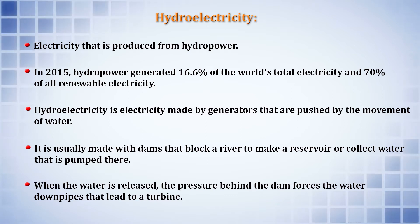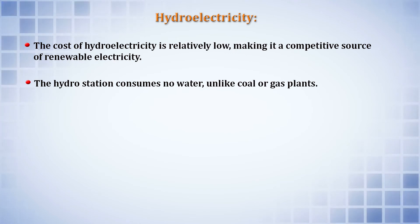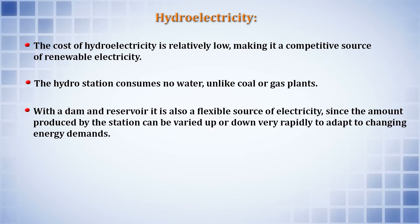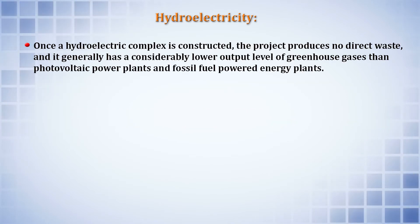When water is released, the pressure behind the dam forces water down pipes that lead to a turbine. In India, we have large amounts of hydroelectricity as well as thermal power plants. The carbon footprint of hydroelectricity is low, making it a very good source of renewable electricity. With a dam and reservoir, it is also a flexible source of electricity, as the amount produced can be varied rapidly to adapt to changing energy demands. Once a hydroelectric complex is constructed, it produces no direct waste and has a considerably lower greenhouse gas output than photovoltaic or fossil fuel-powered energy plants.